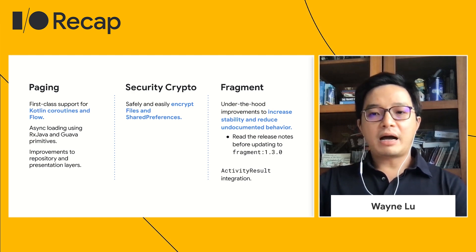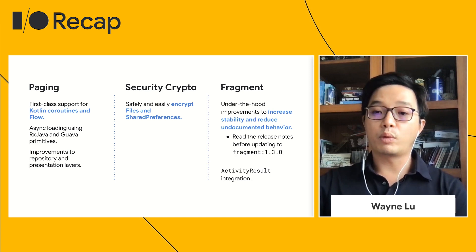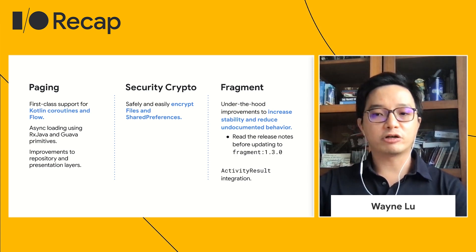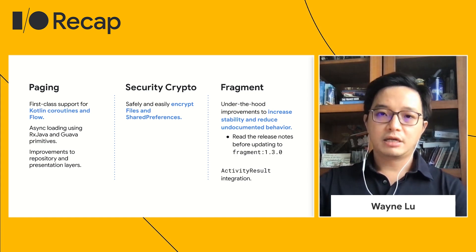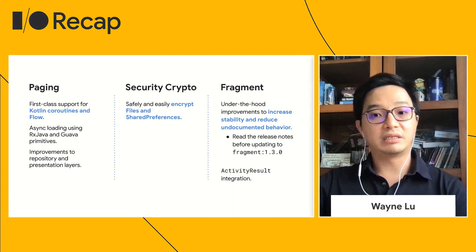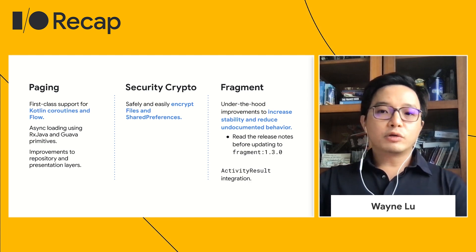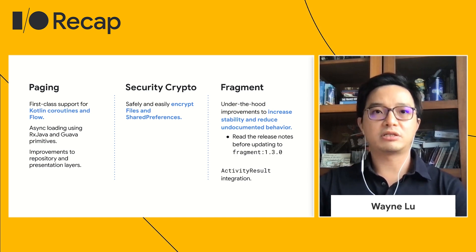Under Fragment, we have performed many stability improvements. This may require work to accommodate the strict enforcement of API contracts. You should pay careful attention to testing. The Fragment release notes call out more specific details. We have also introduced integration with Activity Result, making it possible for you to register results from a fragment.